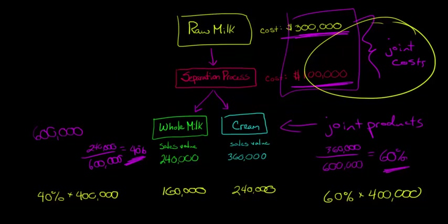But after the split-off point, let's say for example we have some kind of sell or process further decision to make, which I have a video on that as well. Basically we don't want to be thinking about the allocation of these joint costs, because at that point if we're deciding whether to process something further, the joint costs have already been incurred and they shouldn't be reflecting our decision-making.